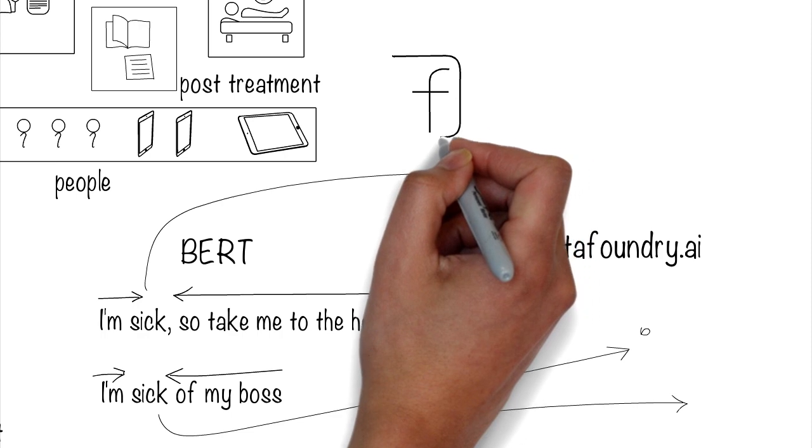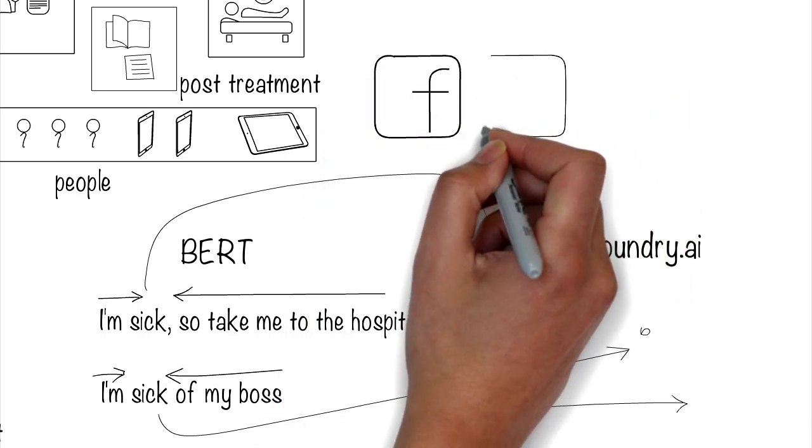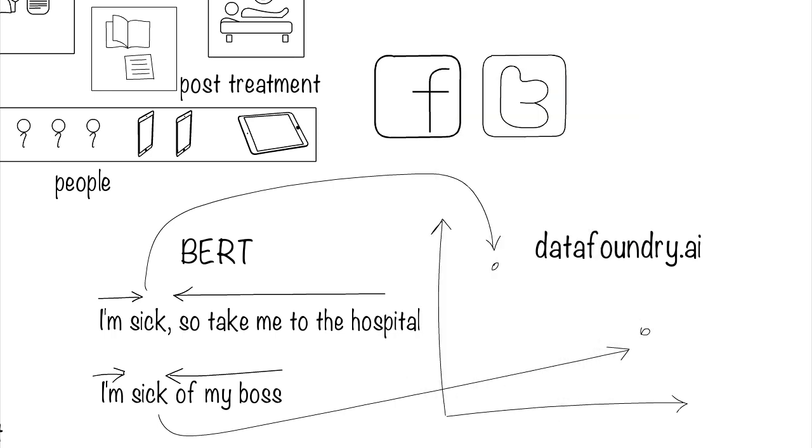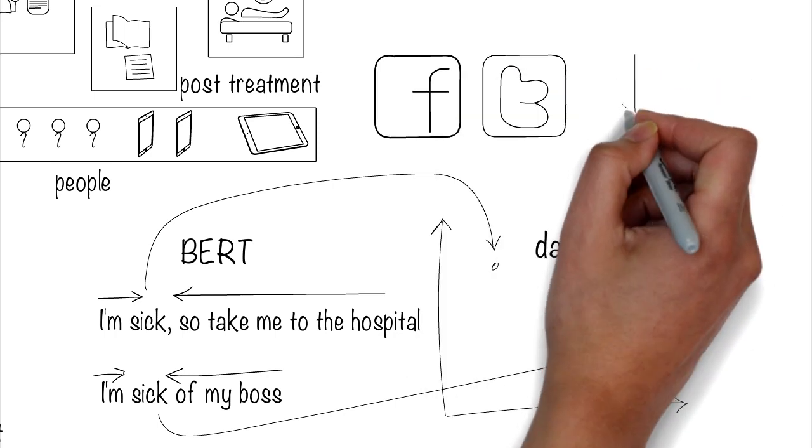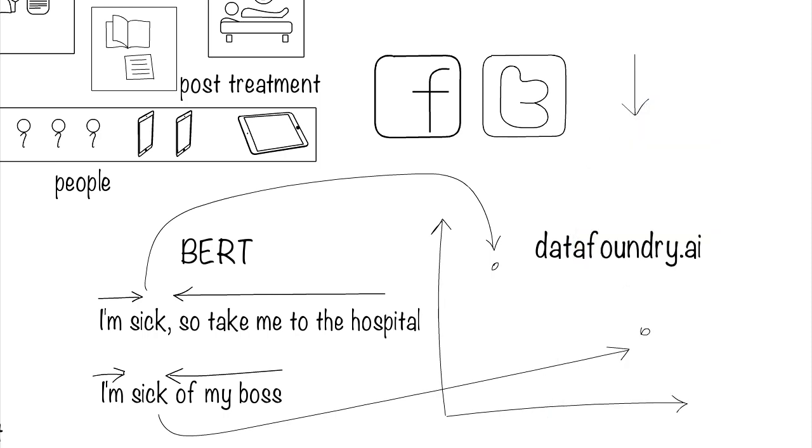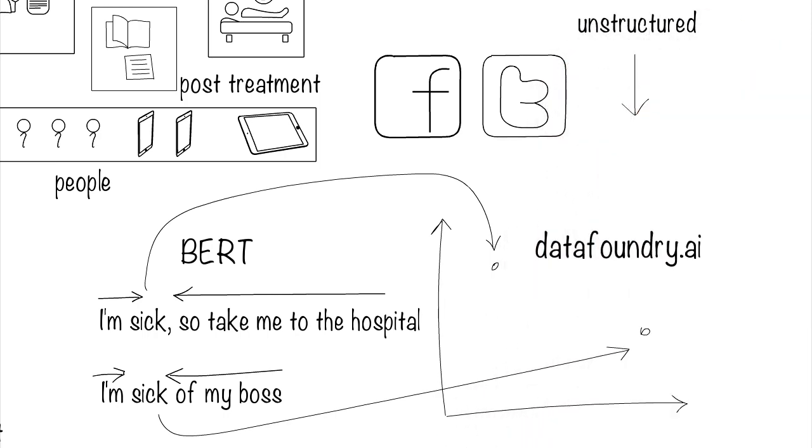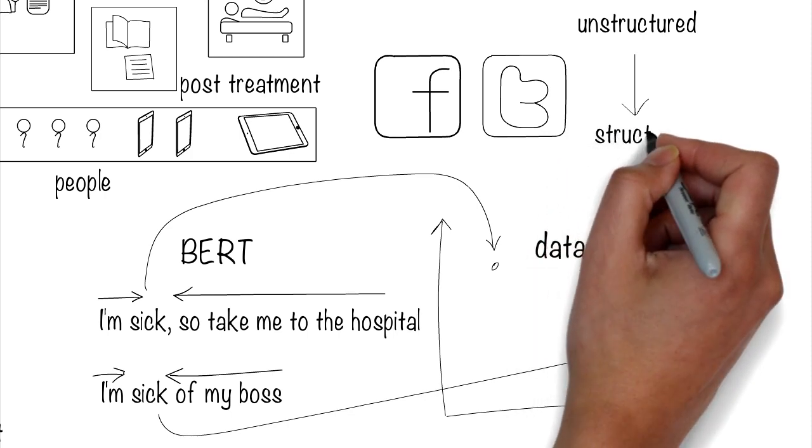Other forms of textual data are social media data where people share and talk about the coronavirus, Google searches, Twitter feeds, and so on. The unstructured nature of textual data is what makes advanced NLP a great tool to deal with them.